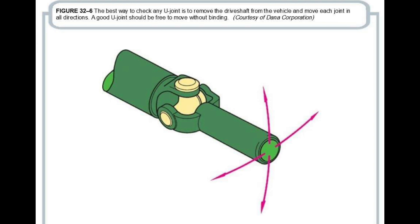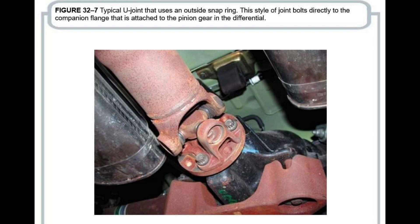U-joints are commonly found in drive shafts, allowing them to flex as the vehicle suspension moves, transmitting power from the transmission to the differential.